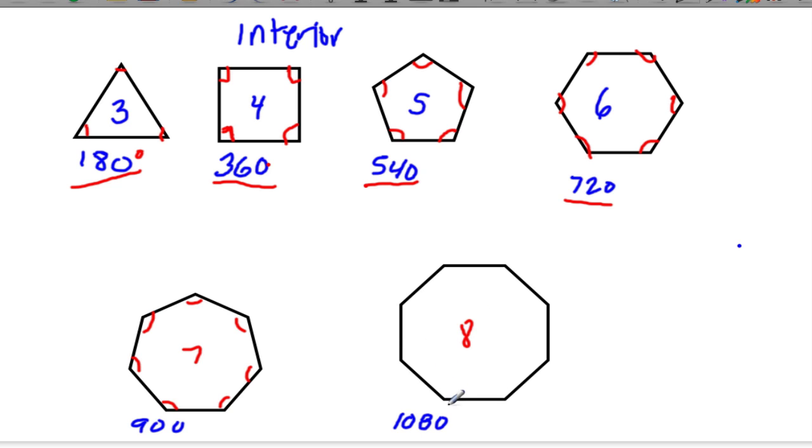And then an octagon has one, two, three, four, five, six, seven, eight interior angles, which always add up to 1080, or typically stated, 1080 degrees.